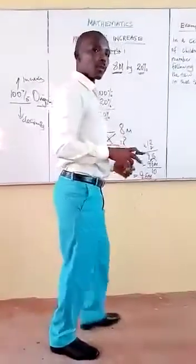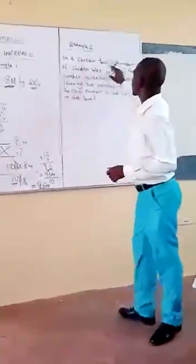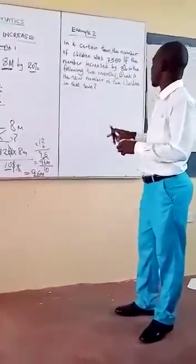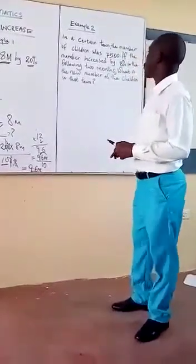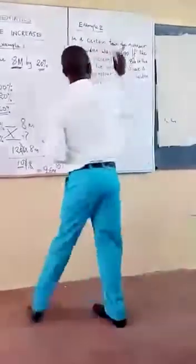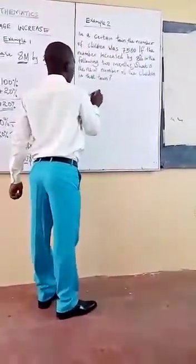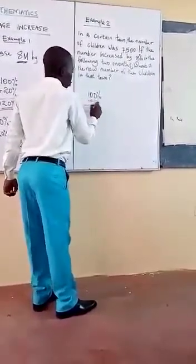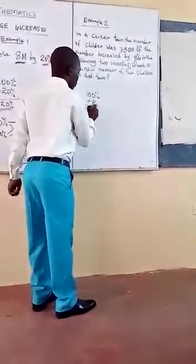I hope you have understood that. Look at the next example. In a certain town, the number of children was 7,500. If the number is increased by 8% in the following two months, what is the new number of children in that town? Remember, we are saying the original number of children was 100%, it is increased by 8%, so the new value is 108%.